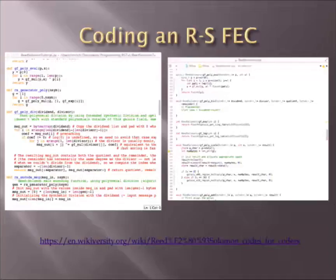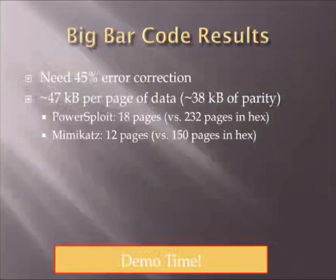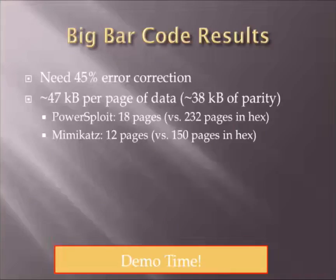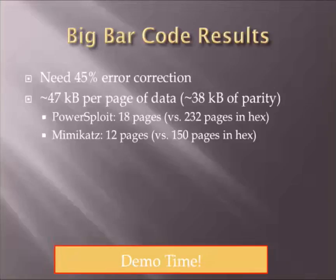Because of the large heat map of errors in the middle, I needed about 45% error correction for it to work, which means I only got about 47 kilobytes of data per page. That's still an order of magnitude better than hex: PowerSploit goes from 232 pages down to 18. You can really start moving data now with a good compression advantage over the previous methods.